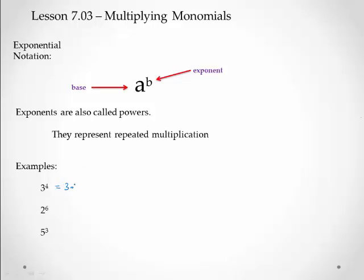3 to the 4th is 3 times 3 times 3 times 3. Four 3's, not 3 times 4, but 3 times 3, four times, which is 81.